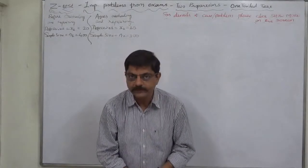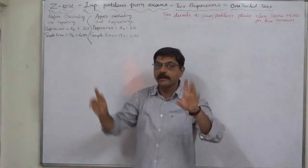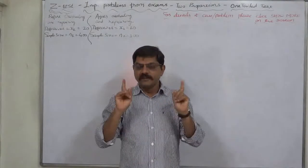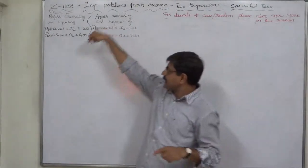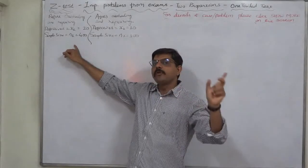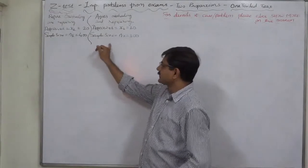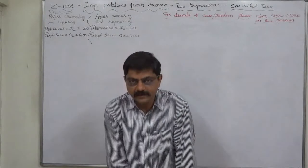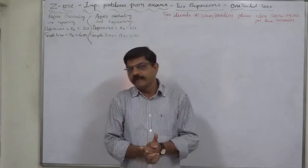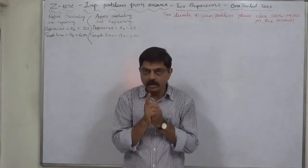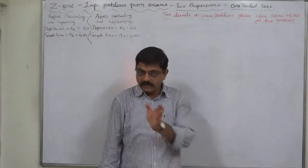What do we mean by the machine has improved? The proportion of defective articles after overhauling and repairing is less than the proportion before overhauling and repairing. The proportion of defective articles to the total produced after repairing is less than the proportion before repairing — that is the proof that the machine has improved.